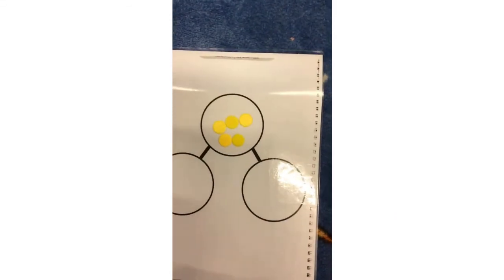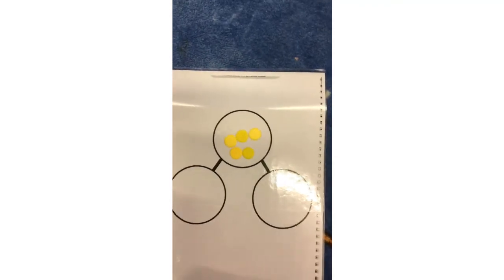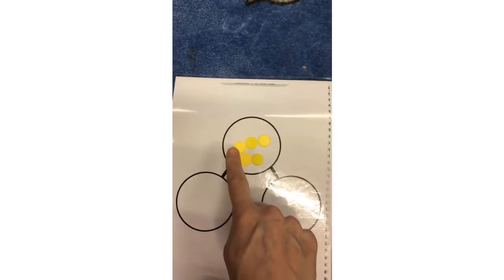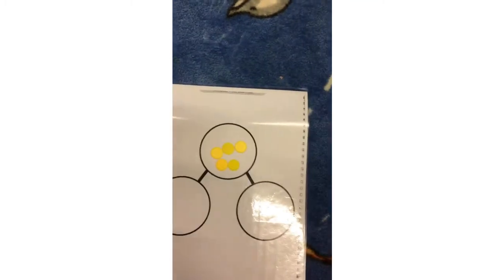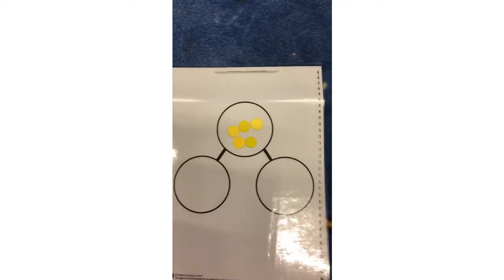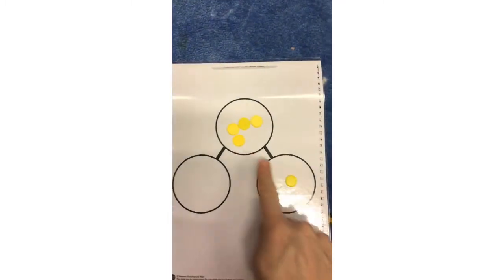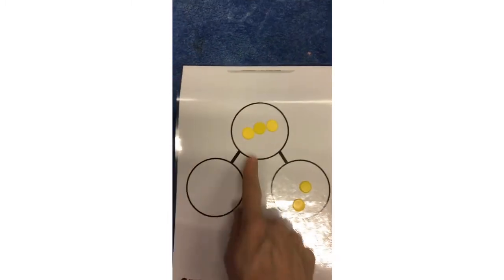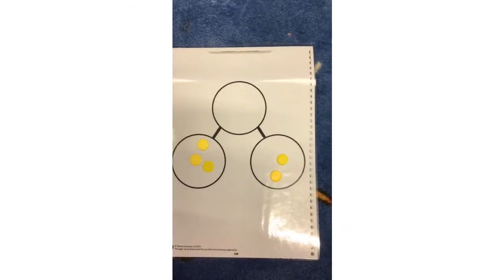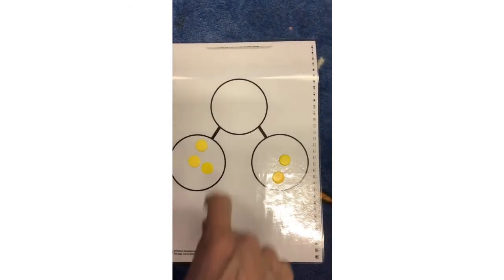Here is my whole. I have five counters to represent the five cupcakes. One, two, three, four, five. How will I share them and put them into two parts? One, two in this one and I think I'll put the rest in this one. I've got three here and two here.